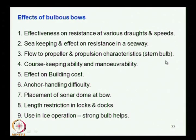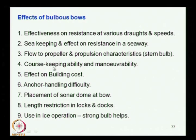Flow to propeller and propulsion characteristics: we have seen the stern bulb — if a stern bulb is provided the flow improves to the propeller. The bulb also influences flow characteristics, course keeping ability, and maneuverability — the turning performance of the ship and its ability to maintain a course depends on the underwater form. The provision of the bulb alters the underwater form and can have a negative effect on directional stability.